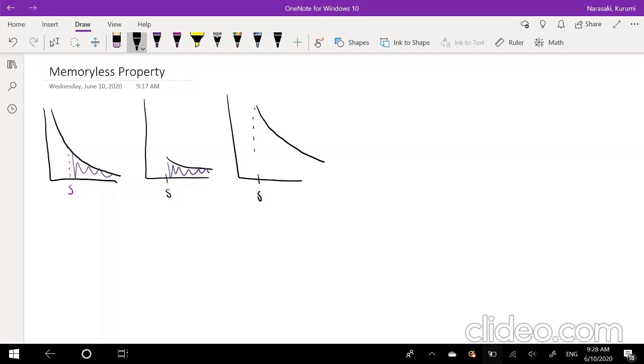It's the exact same graph that we initially had. So the idea is that even if it starts, even if you wait one hour, it really doesn't matter that you already waited an hour. The function, the probability after that is going to be the same.